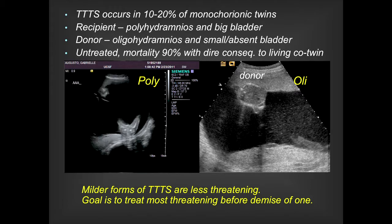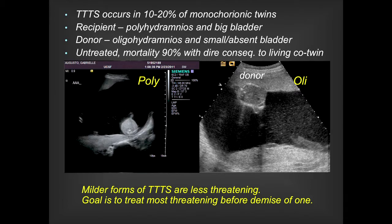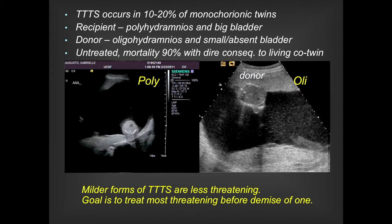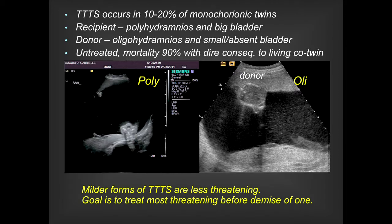Twin-twin transfusion, where you actually get net flow of blood from one twin to the other, occurs in about 10% to 20% of monochorionic twins. You get a recipient who has polyhydramnios and a big bladder, and a donor who has oligohydramnios and is often stuck on one side of the uterine wall. Untreated, it has a very high mortality. You don't want one of these co-twins to die because of the possibility of back-perfusion and the ensuing deficits in the living co-twin.